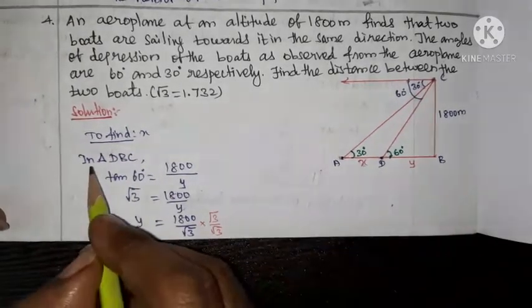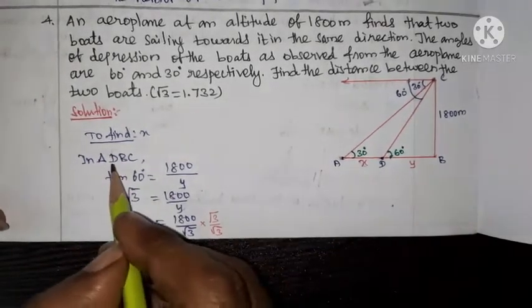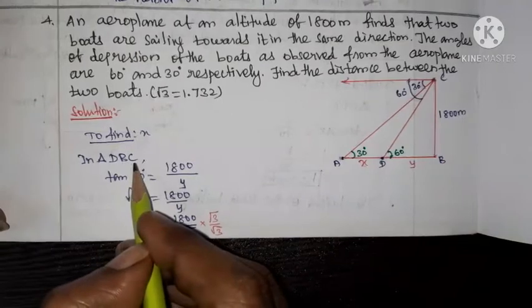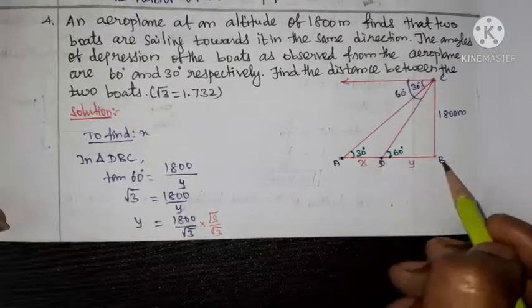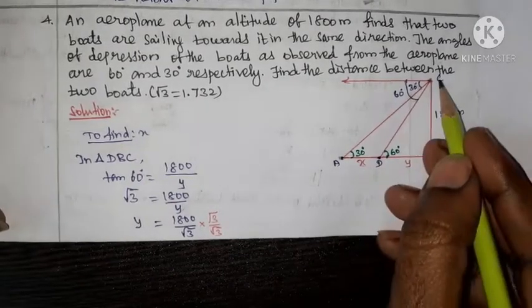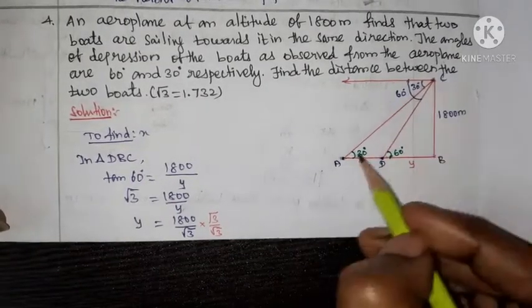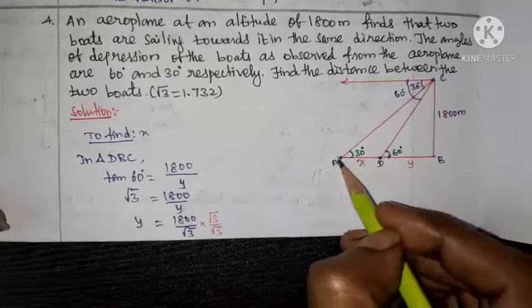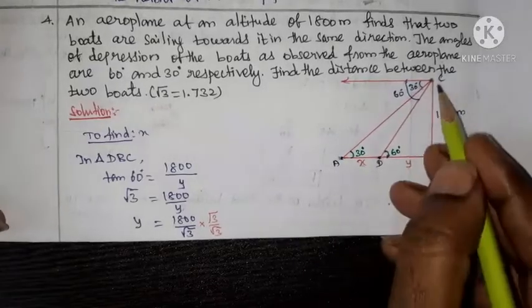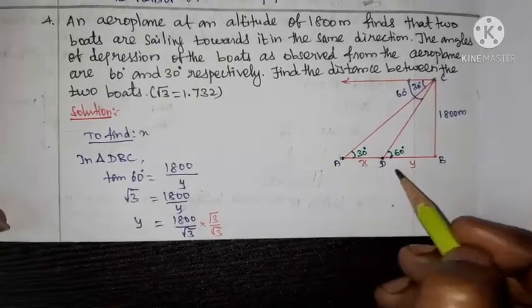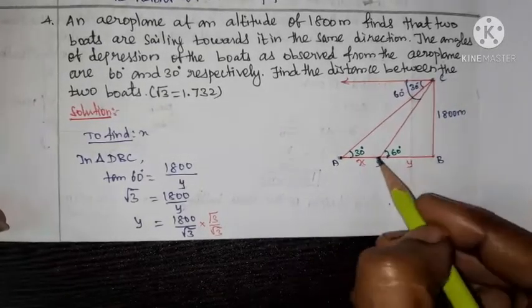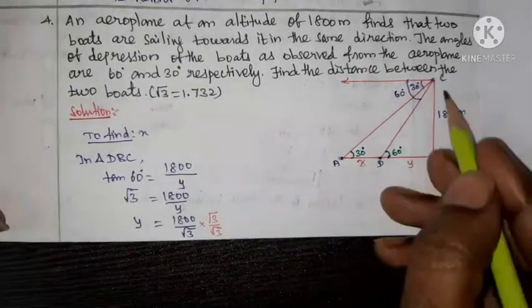The triangle is DBC. So the triangle is ABCD. Consider triangle DBC for the first calculation.